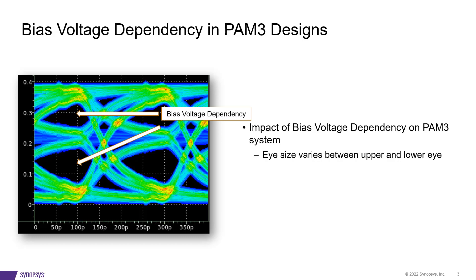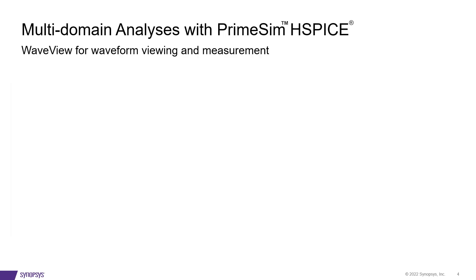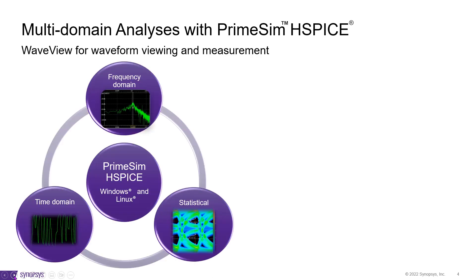Note that, owing to bias voltage dependency, the eye size varies between the upper and lower eye. In designs with multi-level logic, the device supplies voltage into multiple logic levels and hence signal-to-noise ratio degrades. Therefore, the requirement for simulation accuracy becomes increasingly important so that designers can assess the quality of the system in detail, taking into consideration the buffer's non-linear effects.